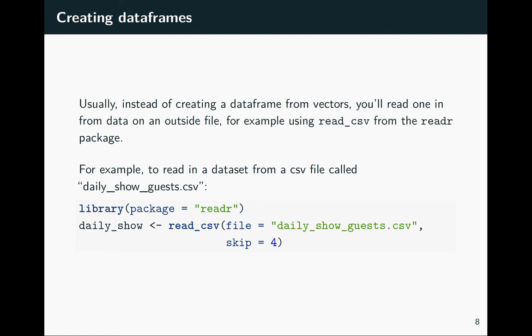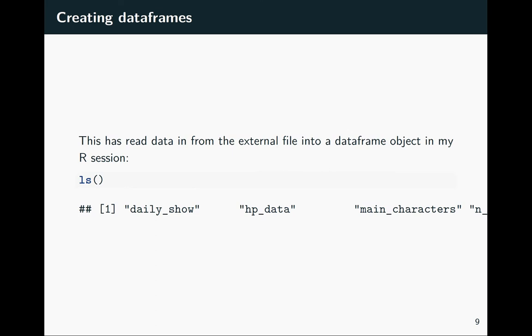Instead of doing this process of writing your own data frame or creating it from vectors, usually we'll be reading in data from somewhere else. This is an example—I'm not going to go deeply into it right now because we're going to cover this a whole lot next week—but if you have data in a comma-separated value format, a CSV format, you can use the read_csv function from the readr package. This is taking a whole very large file of data and bringing it in as a data frame where we can work with it. When we do ls, which lists all the objects we've named in our current R session, you'll see that daily_show is showing up—we've got that data frame in our R session now.